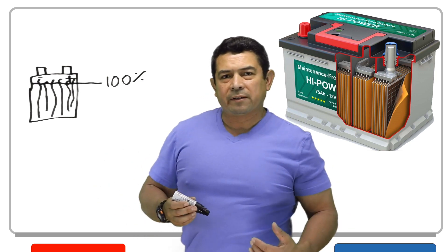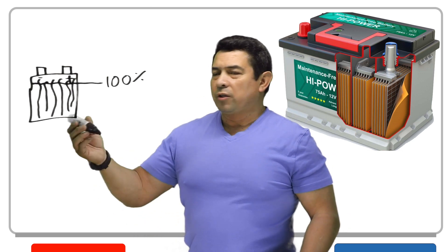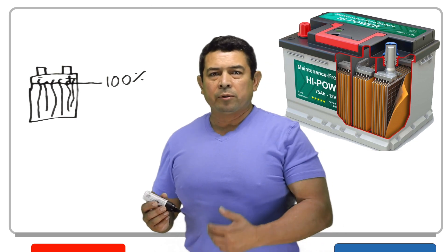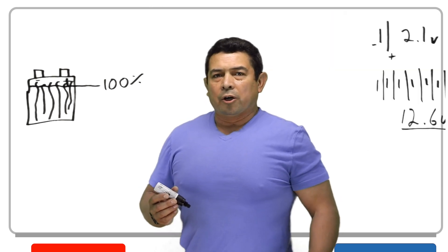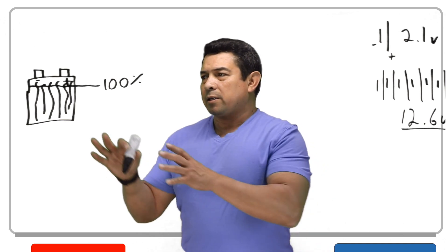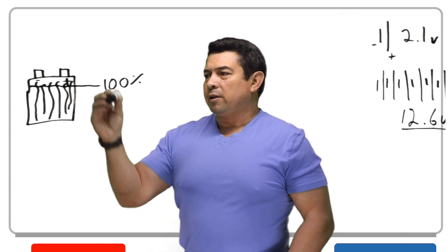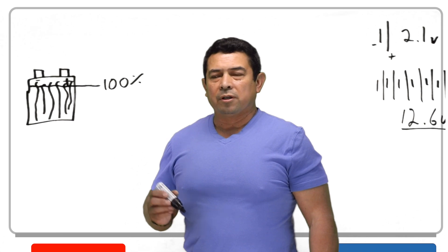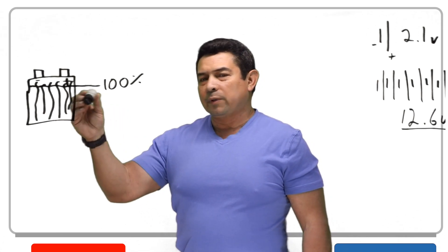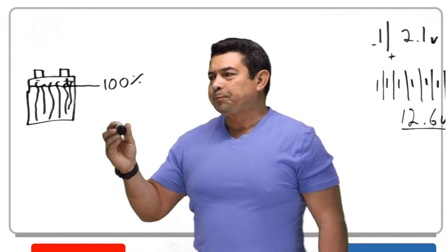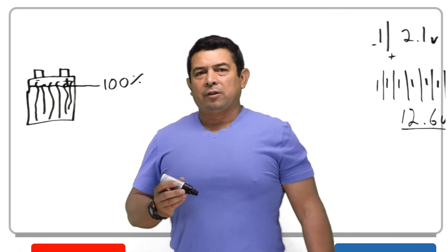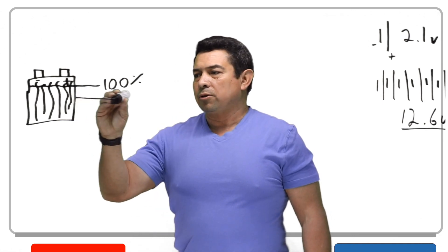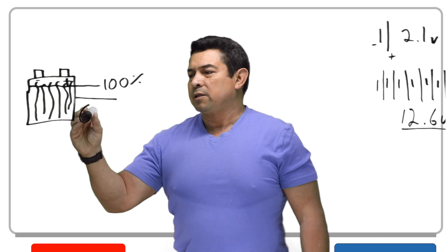Now it's not just lead, because we have a negative side and a positive side. The negative side plates are going to be PbO2, and the positive side plates are going to be Pb. Along with all of that, you're going to have what they call electrolyte solution.